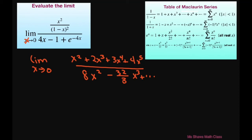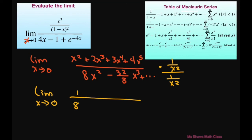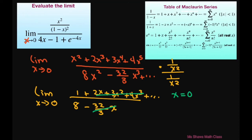That gives us the limit as x approaches 0 of 1 plus 2x plus 3x squared plus 4x cubed plus dot dot dot in the numerator, divided by 8 minus 32 divided by 3 times x cubed plus dot dot dot in the denominator. Applying the limit as x approaches 0, all the x terms go to 0. So our limit equals 1 divided by 8. Thank you, have a nice day, bye-bye.